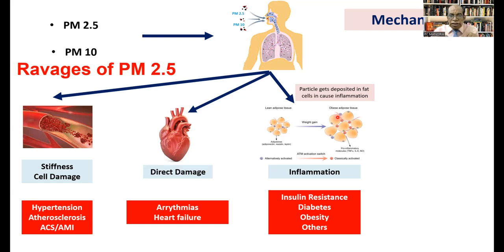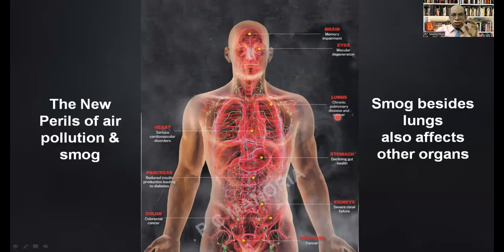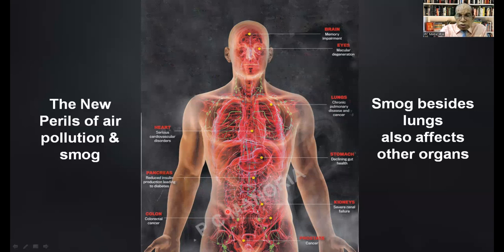PM2.5 also directly damages myocytes and results in arrhythmias and heart failure. Because of its pro-inflammatory effects, it increases oxidative stress, resulting in production of diabetes and several other diseases like stroke, CKD, and epigenetic changes. This shows the perils of air pollution. Besides effects on the heart and lungs, it also affects the pancreas. It is also incriminated in colonic cancer and kidney cancer, and is also incriminated in cognitive decline and even macular degeneration.